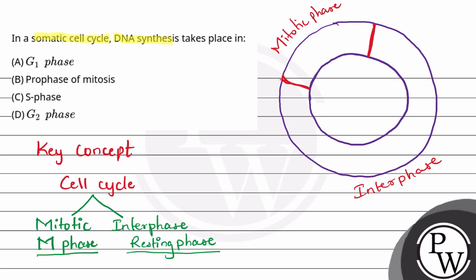So in mitotic phase, there are again four phases: prophase, metaphase, anaphase, and telophase. After that comes cytokinesis, where the cell divides. So there are five phases in mitotic cell division.